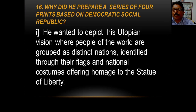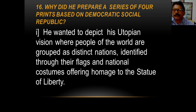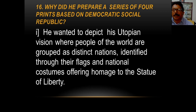Why did Frédéric Souriau prepare a series of four prints based on a democratic social republic? He wanted to depict his Utopian vision, where people of the world are grouped as distinct nations, identified through their flags and national costumes, offering homage to the Statue of Liberty. Utopian means an ideal society which is unlikely to exist — just as Gandhiji dreamt about Ram Rajya, where every village would be self-independent.